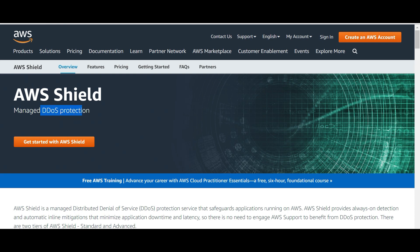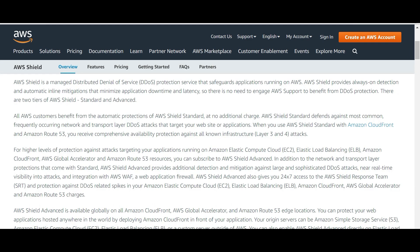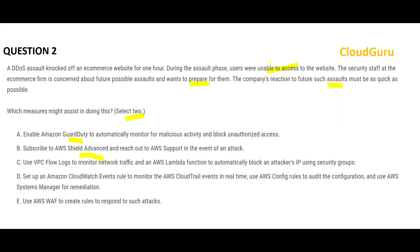Option B is AWS Shield — a service designed specifically for DDoS protection. It is a managed service, so AWS manages it automatically. It performs inline mitigations to minimize application downtime and latency, which is exactly what we want. Our question says people cannot access the website, meaning there is downtime, and Shield will prevent that. Option C is a reactive solution using Lambda to block IPs — a proactive solution is preferred. Option D mentions AWS Config and Systems Manager for configuration changes, which is not relevant here.